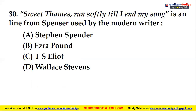The last question: 'Sweet Thames run softly till I end my song' is a line from Spenser used by which modern writer? Options include Stephen Spender, Ezra Pound, T.S. Eliot, and Wallace Stevens. The right answer is T.S. Eliot — this line from Spenser was used by T.S. Eliot in his own poetry.